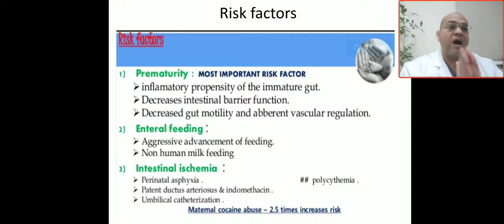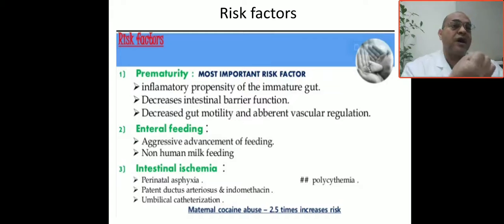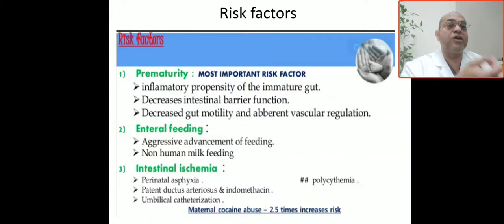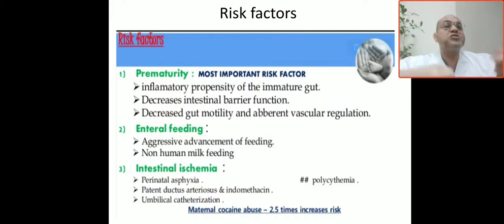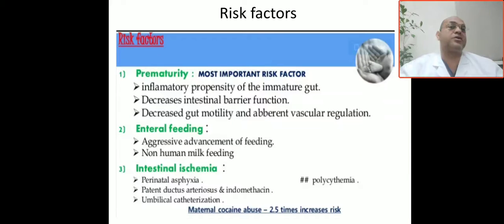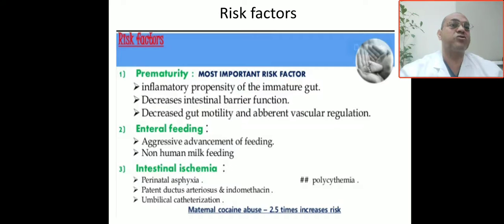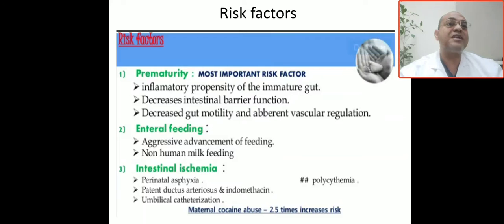So, why are premature babies at high risk for necrotizing enterocolitis? Due to immature gut, immature gut motility, immature vascular regulation, and decreased intestinal barrier function — summarized as intestinal structural and functional abnormalities.